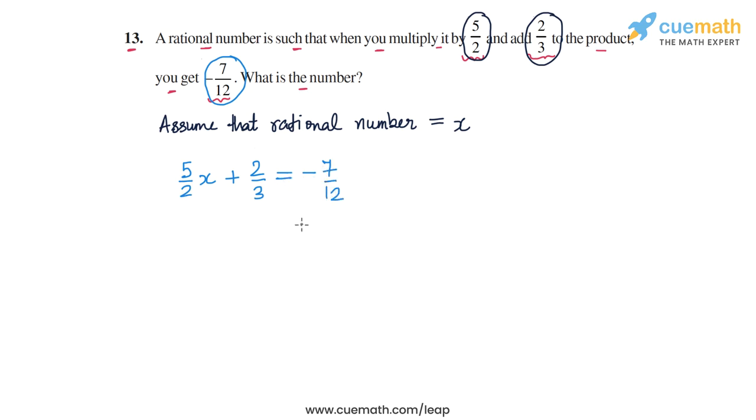Now we need to solve this equation and find the value of x. To do that let's take this term plus 2/3 and transpose it to the right side. So we will get 5/2x on the left side and on the right side we will have -7/12 and -2/3 now and let's combine these two terms on the RHS.